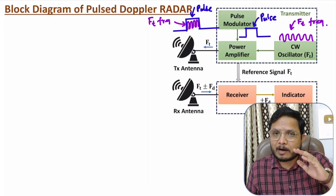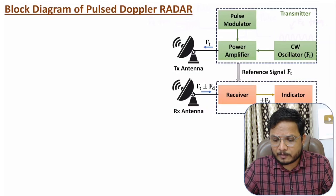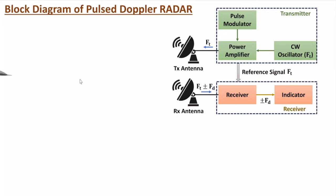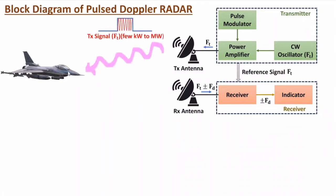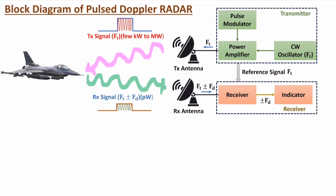Whatever signal we transmit towards the target, identification will be there for moving targets only — this Pulsed Doppler Radar system is used for moving targets only, not for stationary targets. Here, if you observe, we have one object that is moving towards the radar system. The transmitting antenna will be transmitting a high power signal towards this object, and that transmitted signal has frequency ft and is in terms of high power — it could be a few kilovolts to megavolts. For short duration only, we are transmitting this high frequency, high power pulse. Based on the motion of the target, there will be a reflection, and that reflected signal will have a frequency deviation based on the velocity of this target.